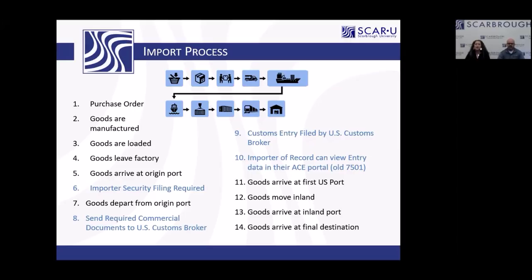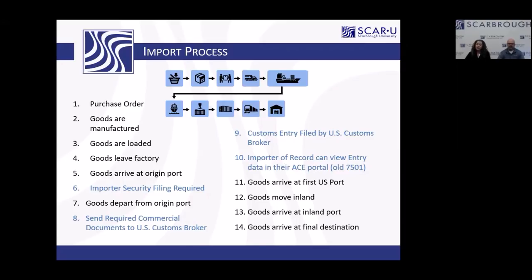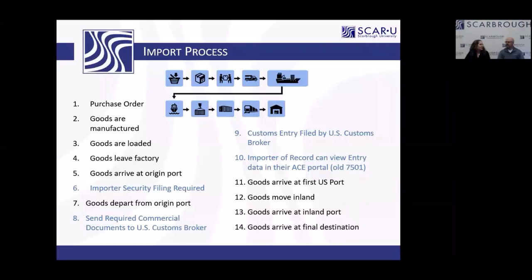This next slide is the basic import process — step by step in very simple terms. Purchase order, goods are manufactured, they leave the factory, and so forth. We've added a couple of steps: when the importer security filing is required — that must be done before goods leave the foreign port — and sending all required commercial documents to your broker before it arrives in the U.S. You can also now view your data in the ACE portal.